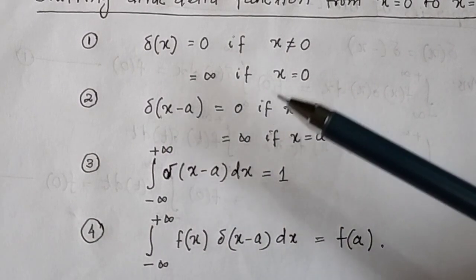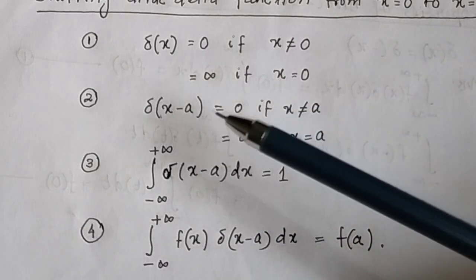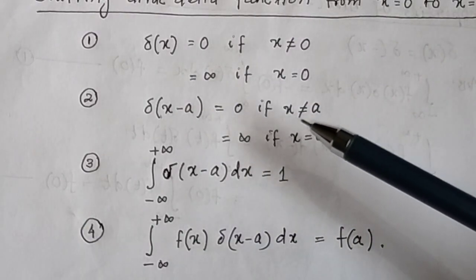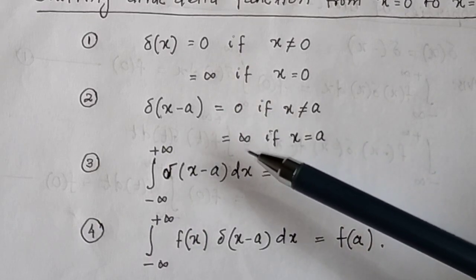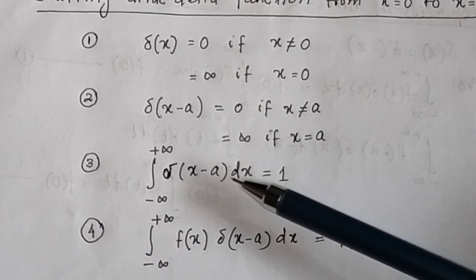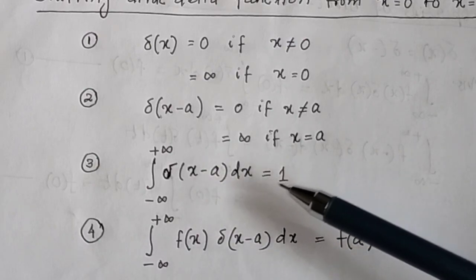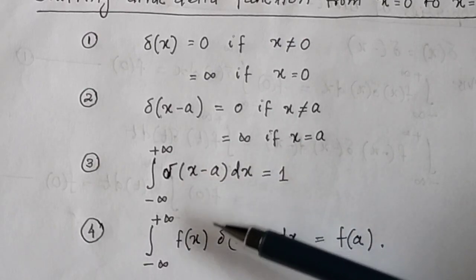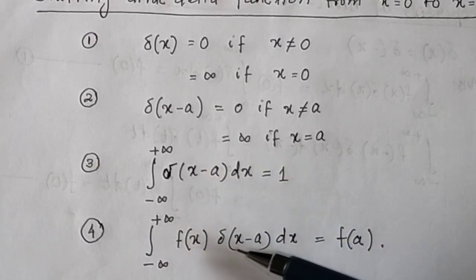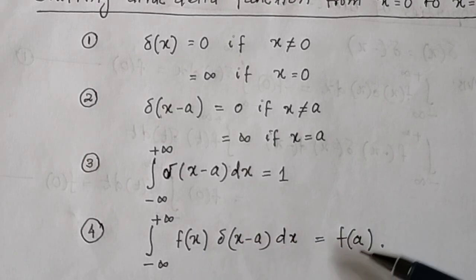So we have to remember these three formulas when you shift x from 0 to a: delta(x minus a) equal to 0 if x not equal to a; equal to infinite if x equal to a; the integral of delta(x minus a) dx is equal to 1; and the integral of f(x) delta(x minus a) dx equals f(a).